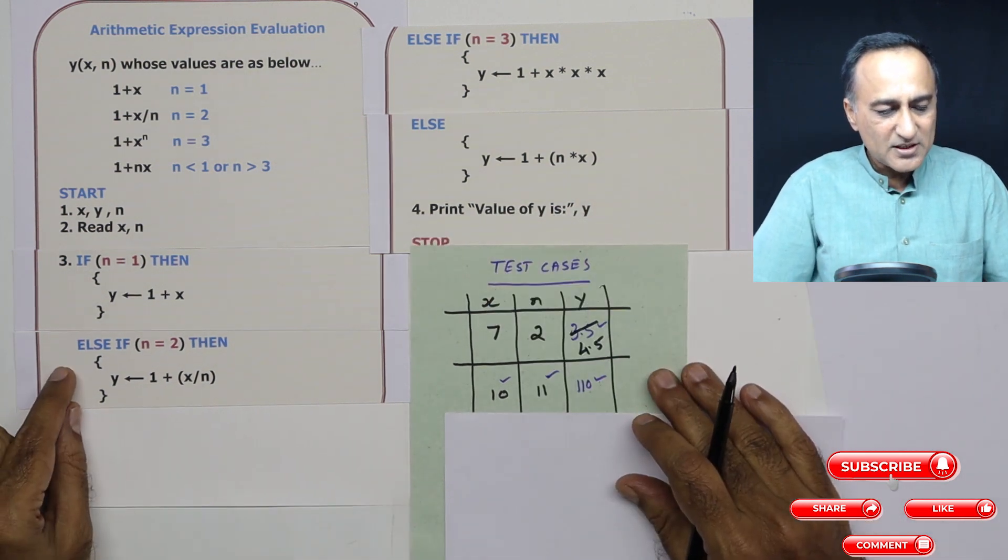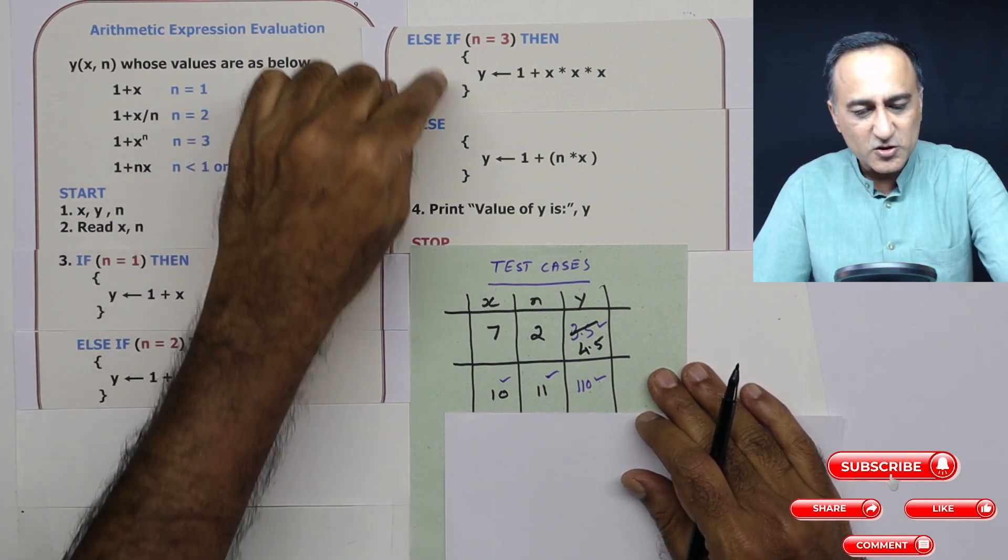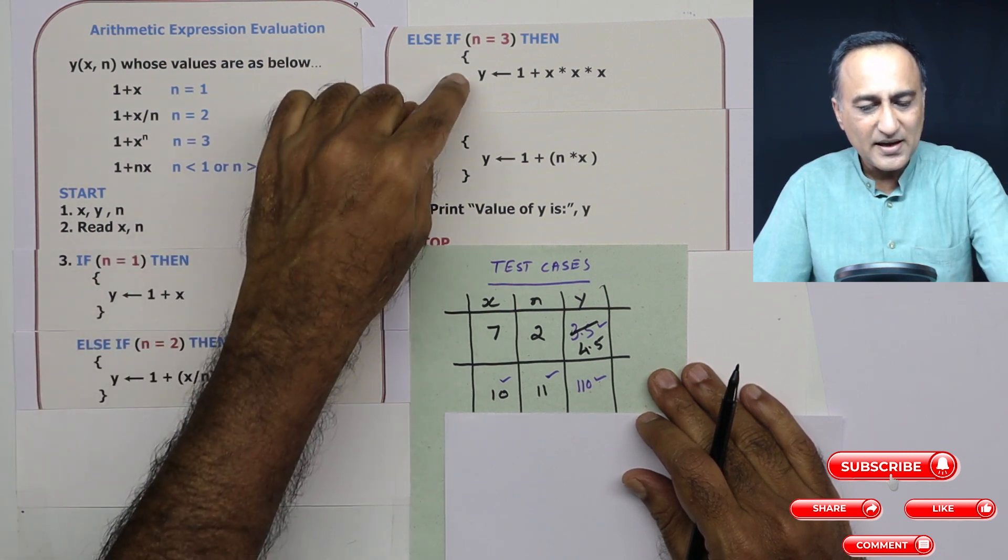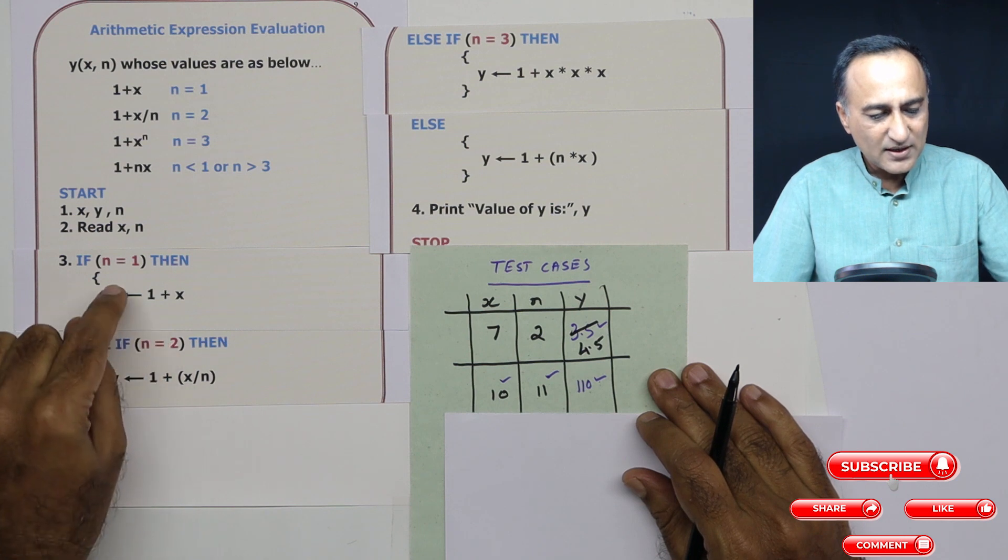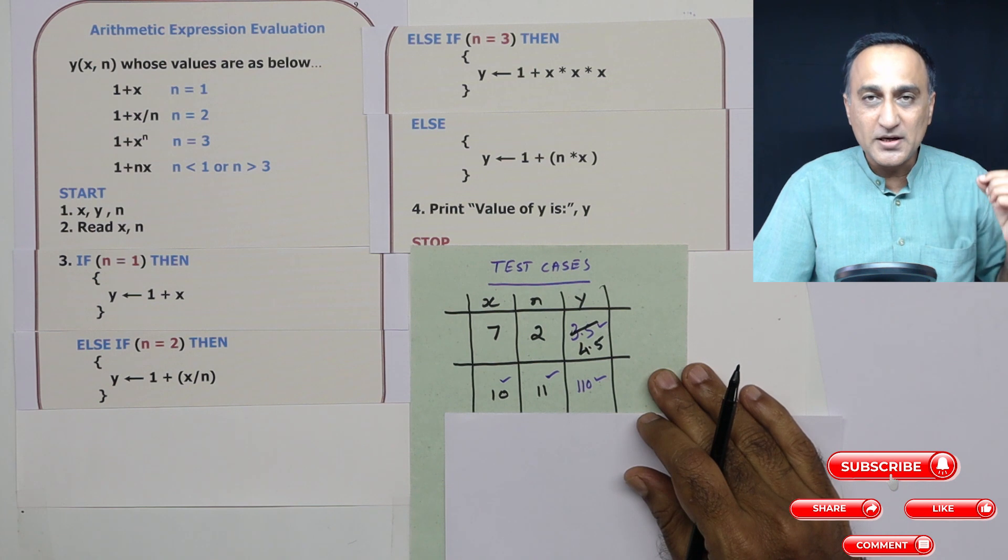So you need to understand in an if-else-if-else-if-else, if one of the conditions is true, the other blocks will not get executed. Since this was true, neither this nor this nor this got executed or produced any output.